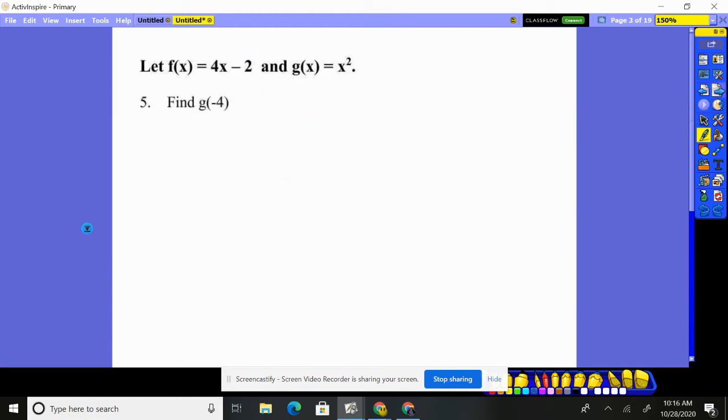Number five, go to the g function and plug in negative four. Well, here's the g function. It says take whatever they give you and square it.